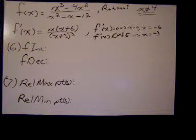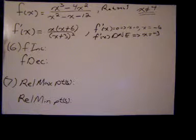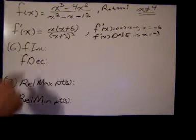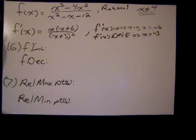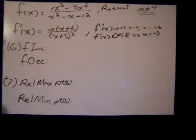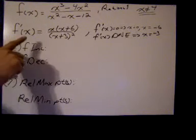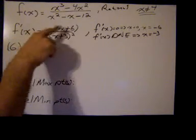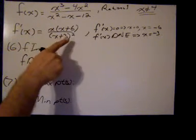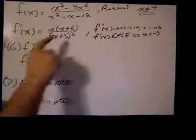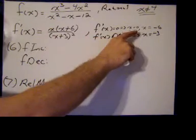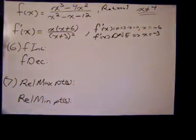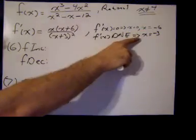Good morning, we're going to continue with the function summary of our rational function. Now it's time to look at increasing and decreasing, and relative max and relative min points. We calculated the first derivative earlier — f prime equals x times x plus 6 over x plus 3 quantity squared. We determined that f prime equal to 0 implied x equals 0 and x equals negative 6, and f prime does not exist implied x equals negative 3.